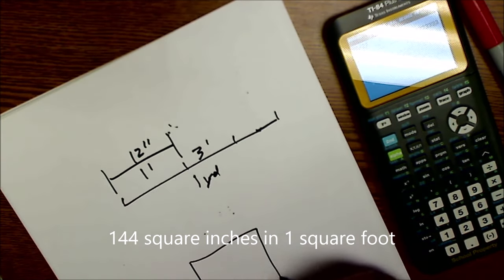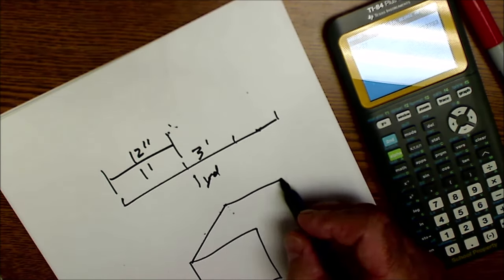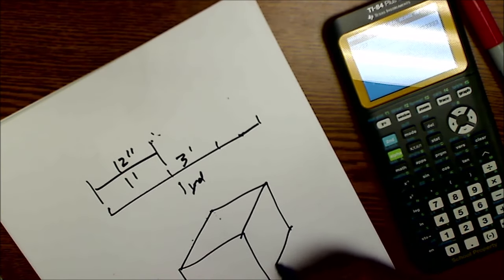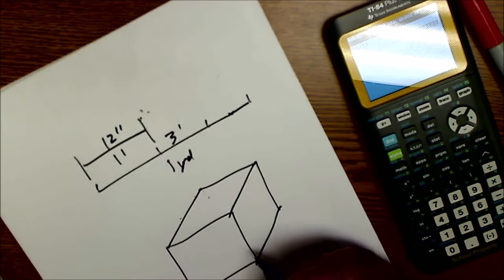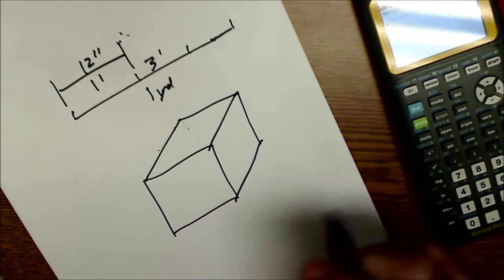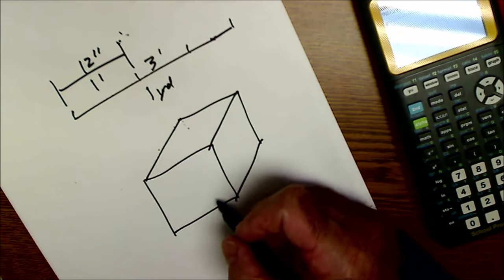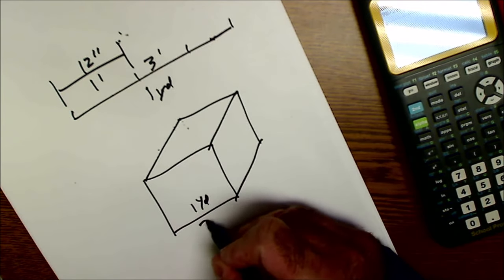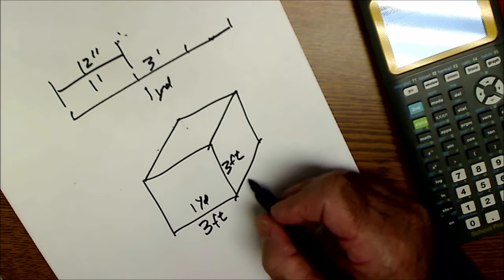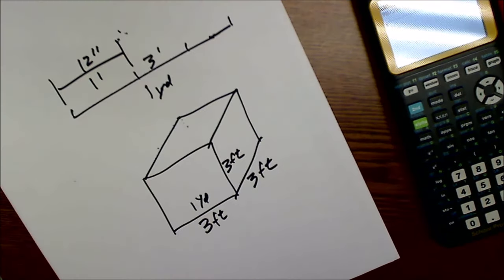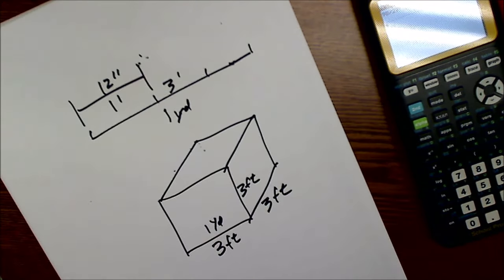But if you're talking about cubic measurements, then you got to cube the number, right? So in a cubic yard of concrete, it seems maybe not that obvious, but a cubic yard—one yard is three feet times three feet times three feet—and that's why there's 27 cubic feet in a cubic yard of concrete.